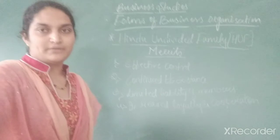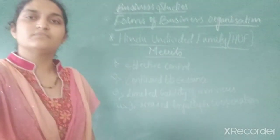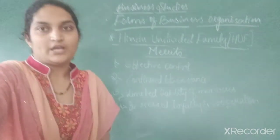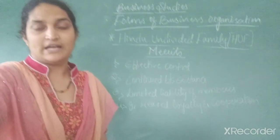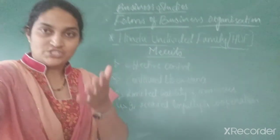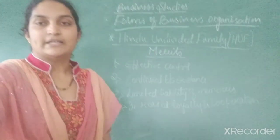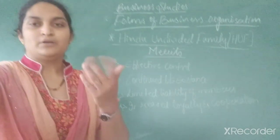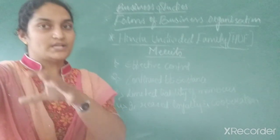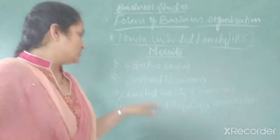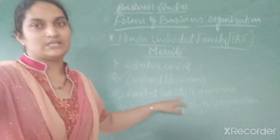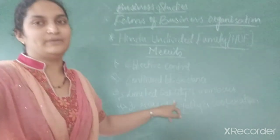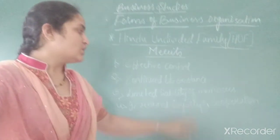Next advantage is limited liability of members. As discussed in the features, the co-parceners will have limited liability up to their shares in the property. The members' liability is limited up to their shares in the property, except the Karta who has unlimited liability.